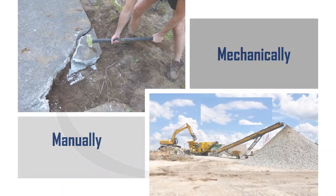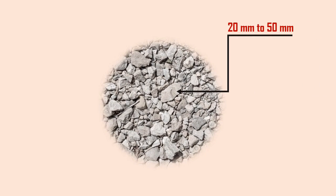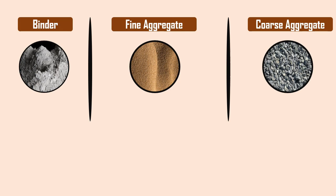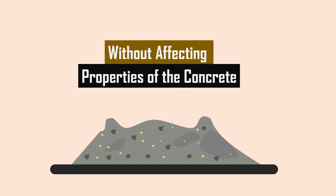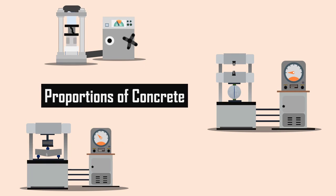Then the debris is crushed either manually or mechanically to a specified size and quality, usually around 20 mm to 50 mm. Based on various research, it is generally accepted that around 30% of natural crushed coarse aggregate can be replaced with coarse recycled aggregate without significantly affecting any of the properties of the concrete. However, it is advised to perform various concrete tests by replacing some part of natural aggregate to determine the perfect proportions of concrete.